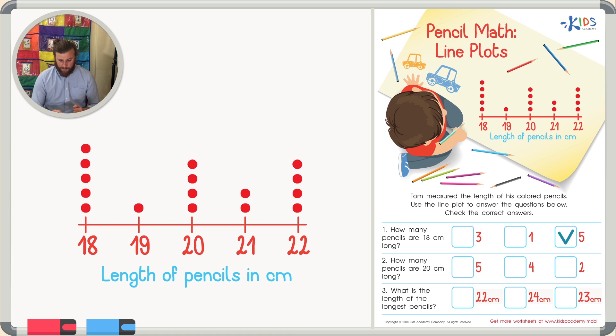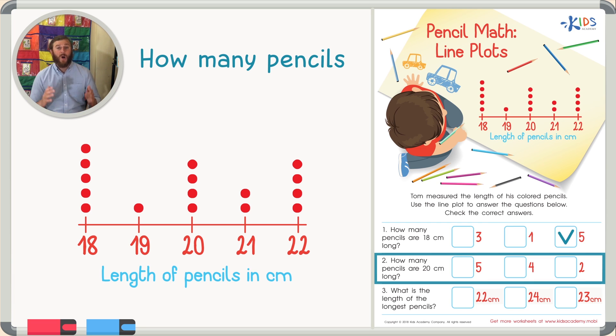Now, let's read the second question. How many pencils are 20 centimeters long? For this question, we're going to have to go to the 20 on the line plot. So, I found the 20. Now, I want to know how many pencils are 20 centimeters long. Again, each dot represents just one pencil. So, we can just go ahead and count the dots.